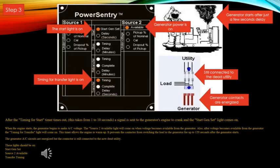It prevents the contactor from switching the load to the generator for up to 120 seconds after the generator starts. The generator AC circuits are energized, but the contactor is still connected to the dead utility. The start light is on, the timing for transfer light is on, and the generator power available light is on. You can see smoke coming out of the generator stack indicating the generator is running. The contactor is still connected to the utility, and the generator contacts are energized — shown in red.